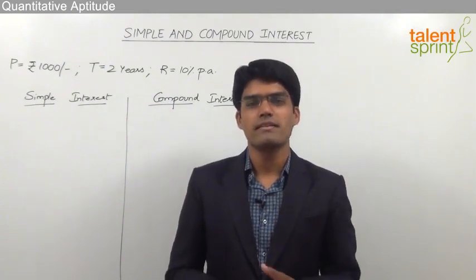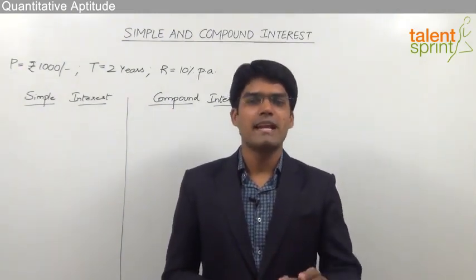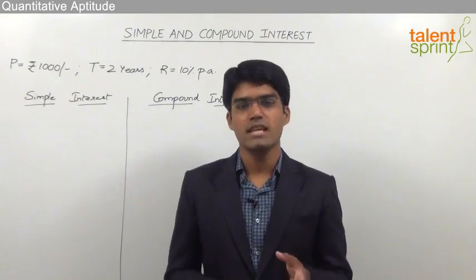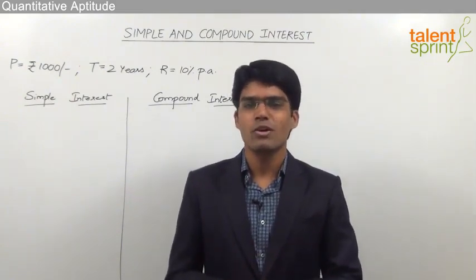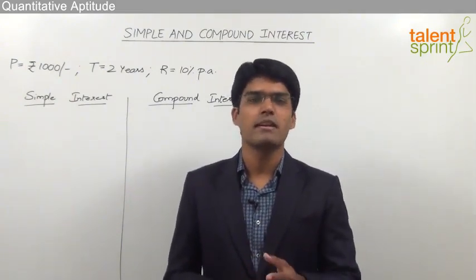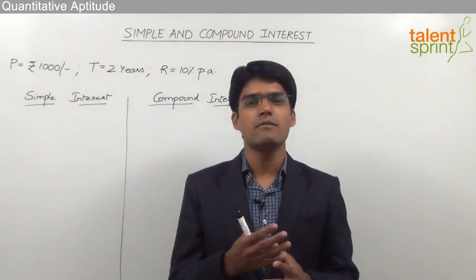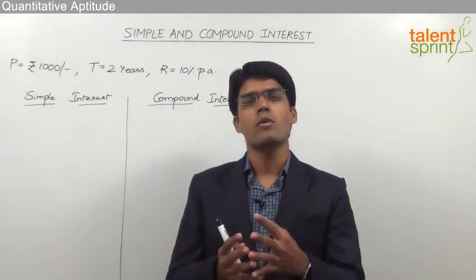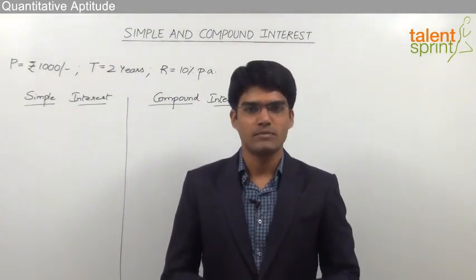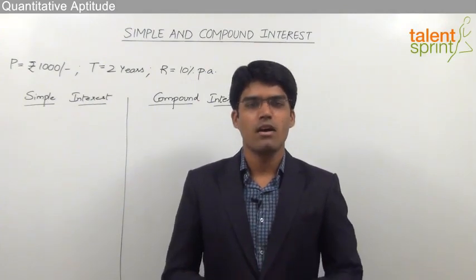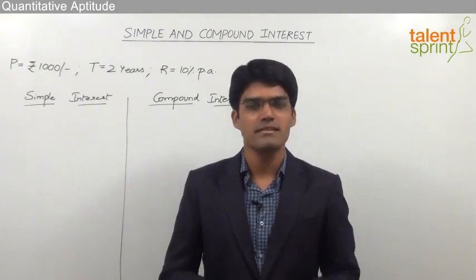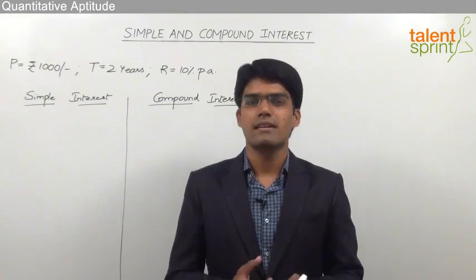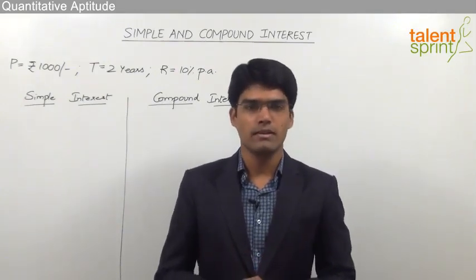In case of simple interest, the interest is paid at the end of every period on a regular basis. Whereas in case of compound interest, the interest is not paid at regular intervals — it gets added to the principal amount, and finally at the end, the interest along with the principal amount is paid back. Let us understand this difference with the help of a simple calculation.